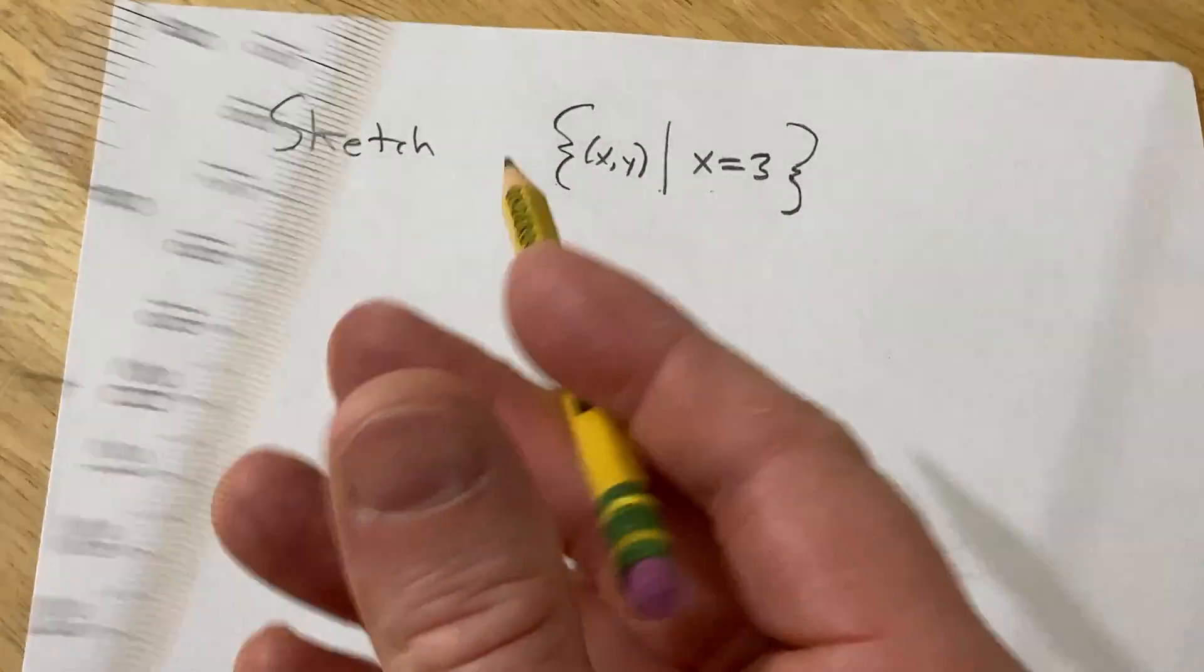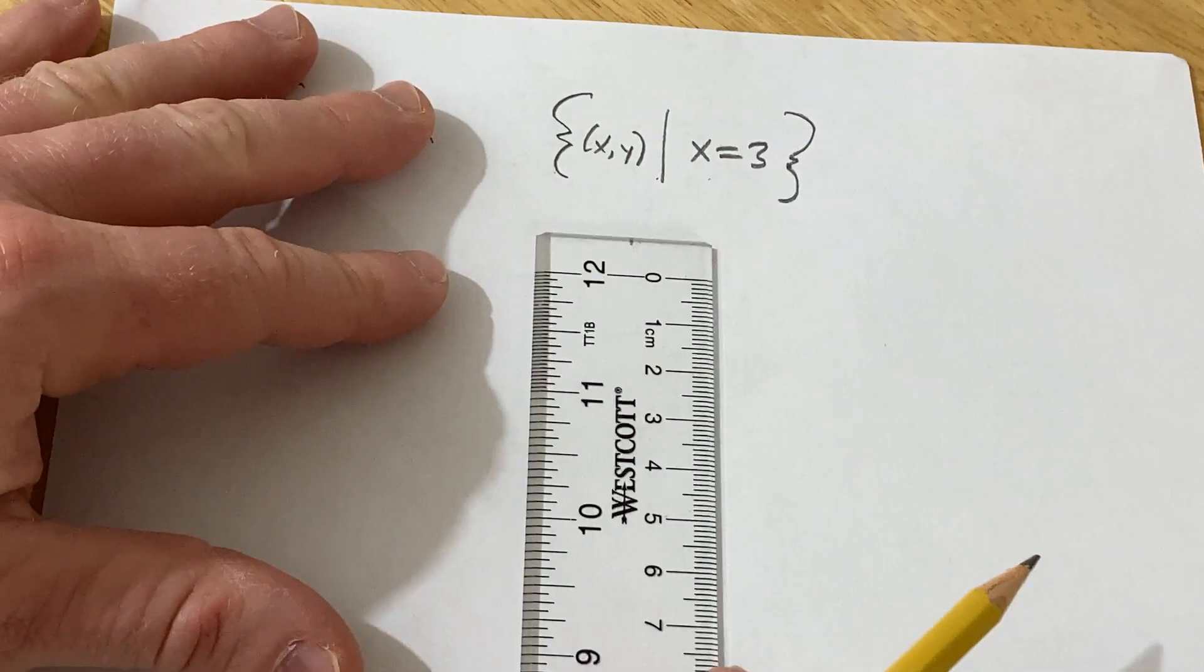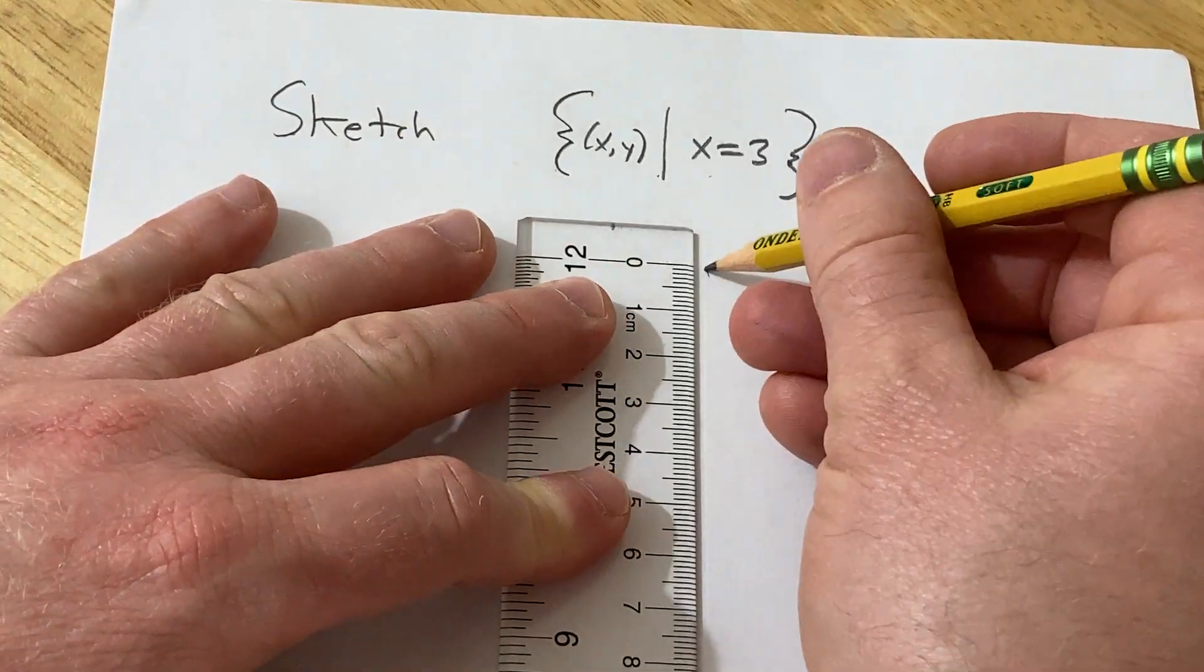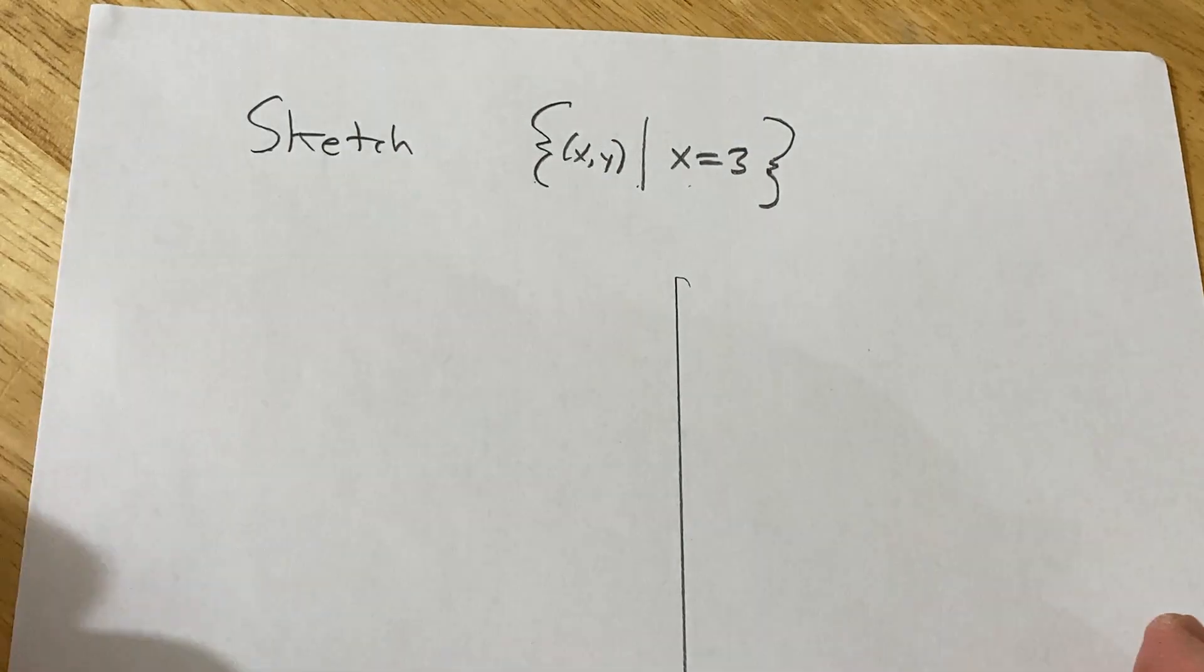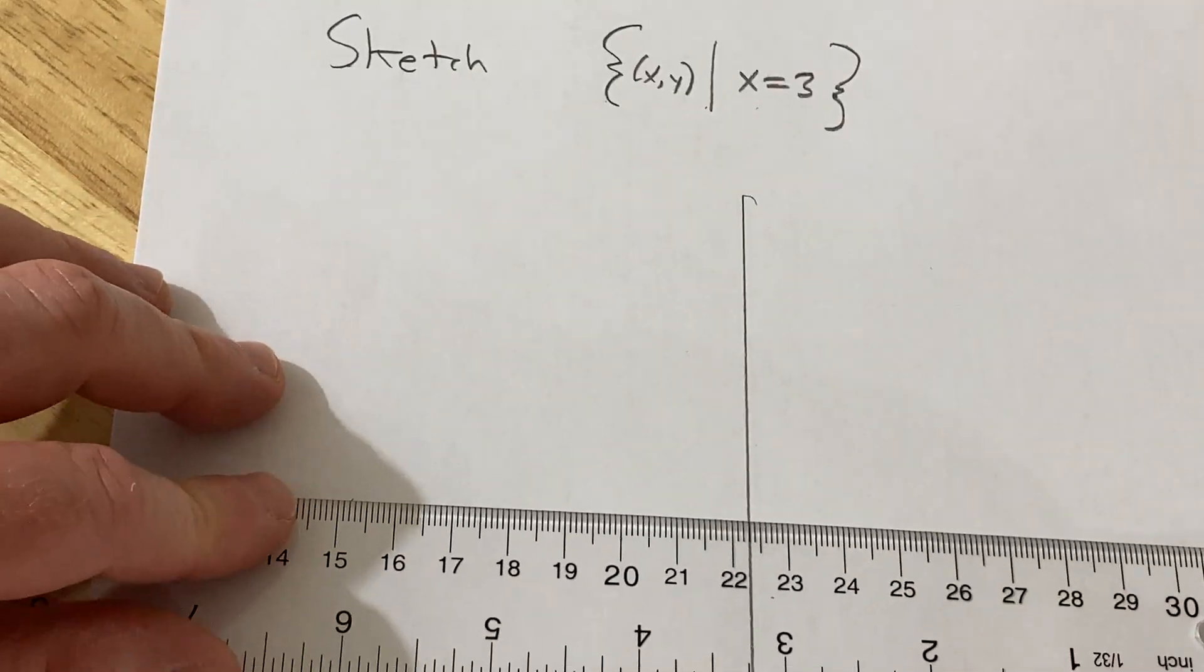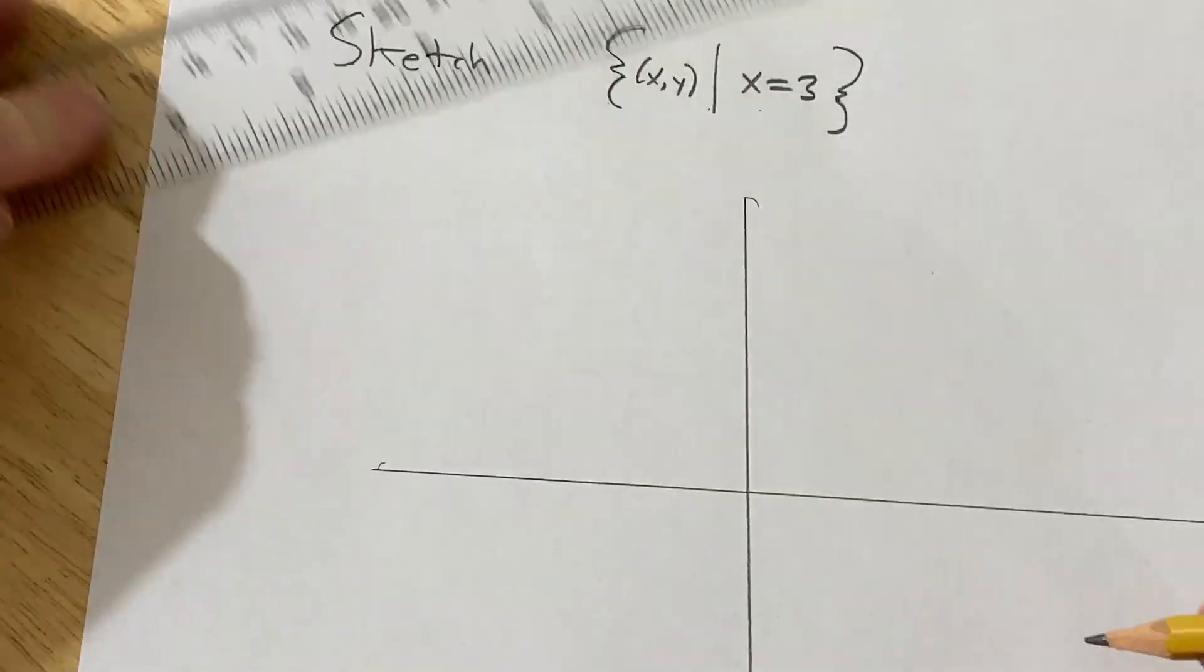Let's start by graphing the xy-plane. I've got my little ruler here to help me graph. Here's the y-axis and then here would be the x-axis.